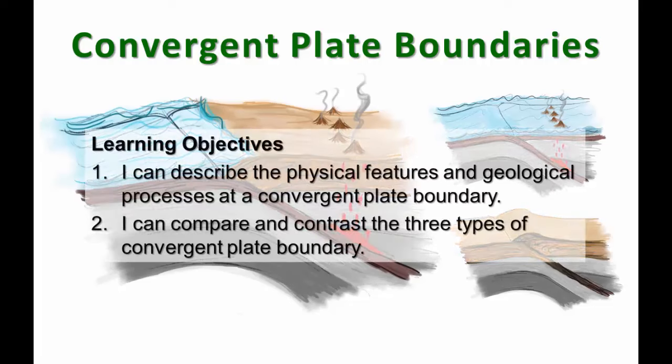Our objectives for this lesson are to make some observations of features found at convergent boundaries and then use those observations to make interpretations of the geological processes that occur at these locations. Then we will explain why the processes we describe produce similarities and differences among the three common types of convergent boundaries.